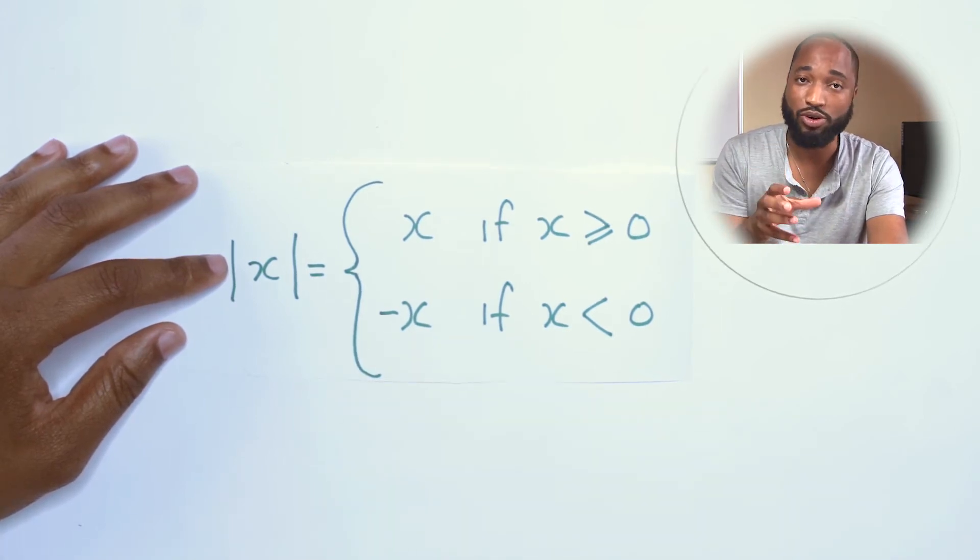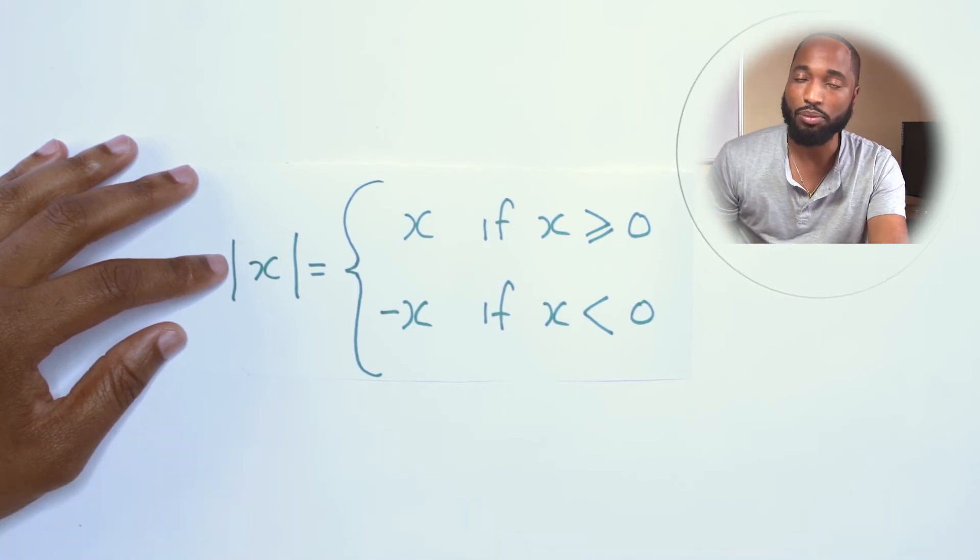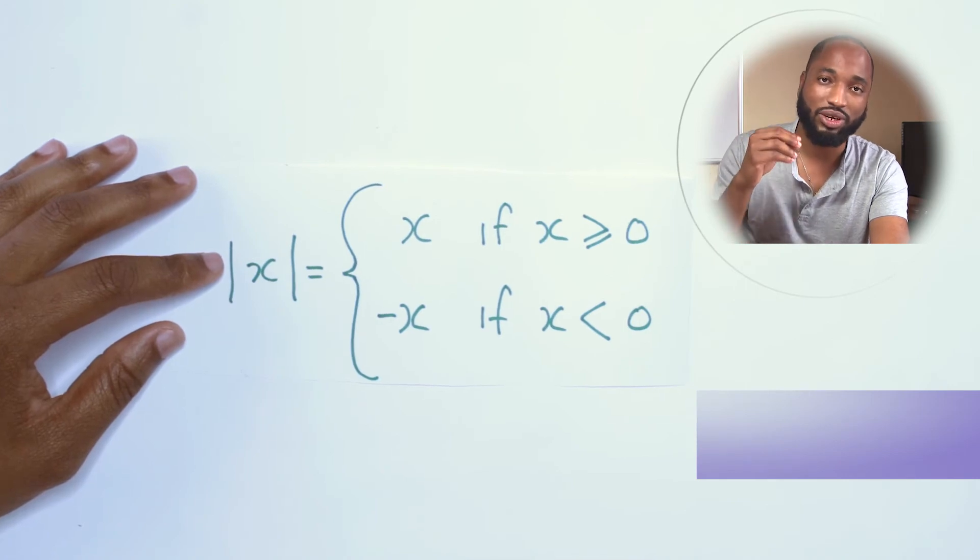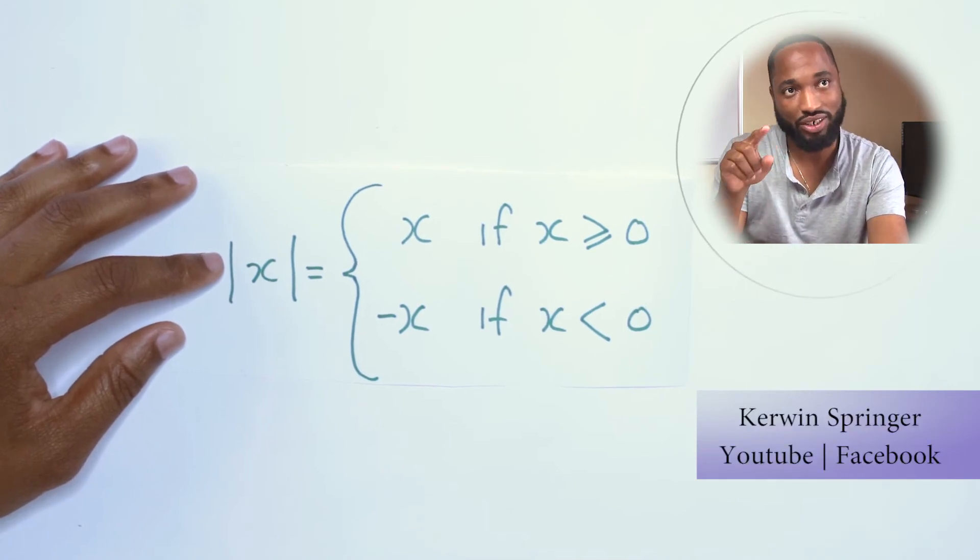So if you had a number like negative 5 and you want the absolute value of negative 5, it's going to be 5. Absolute value of negative 10, it's going to be 10. Absolute value of negative 20 is going to be negative negative 20, which is 20. Simple as that.